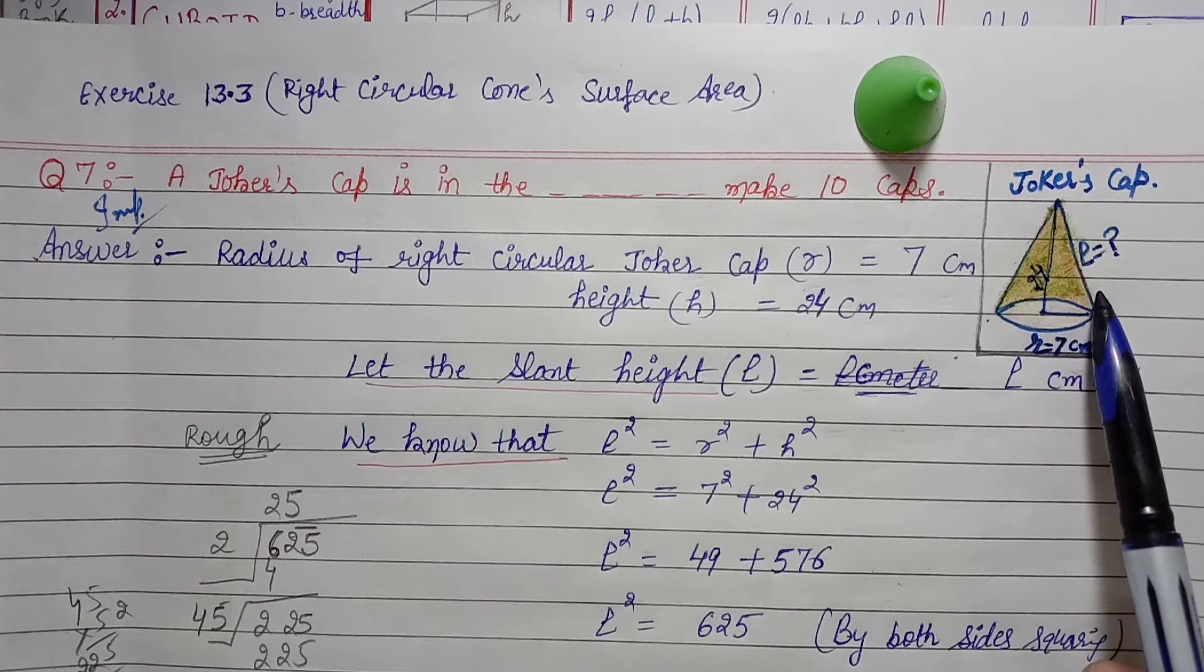We know that slant height of a cone: L² = r² + h². Now we will substitute values, we have radius and height. We can add square root. L² = 7² = 49, plus 24² = 576. L² = 625. Taking square root on both sides, L = 25 cm.